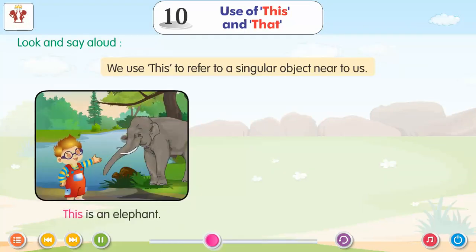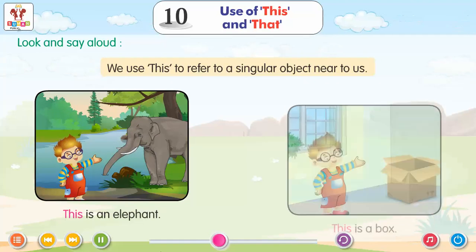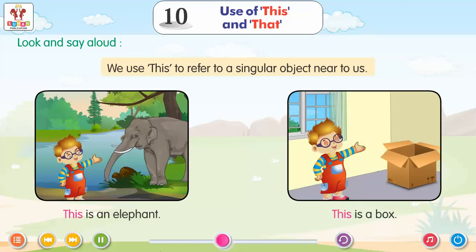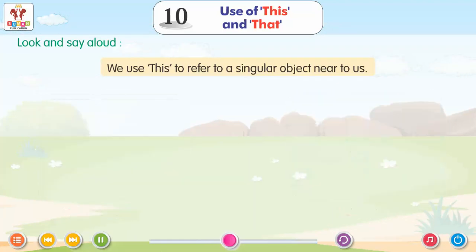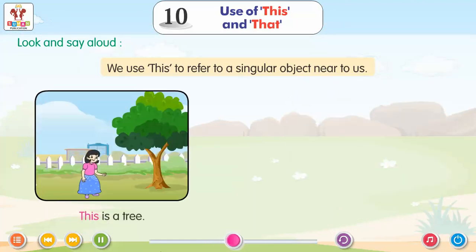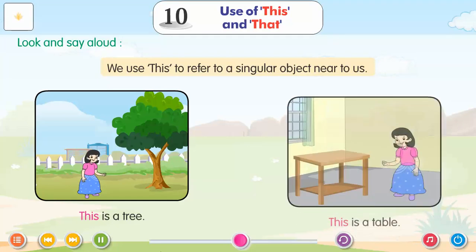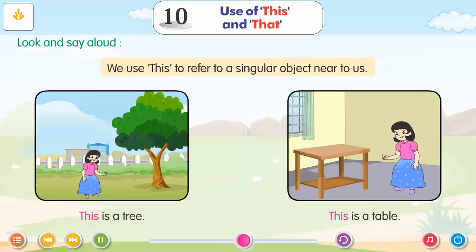This is an elephant. This is a box. This is a tree. This is a table.